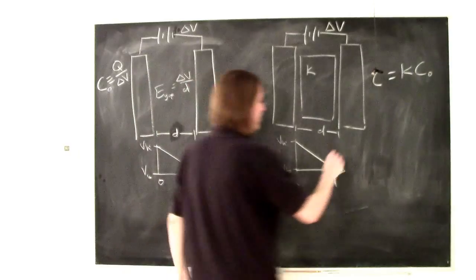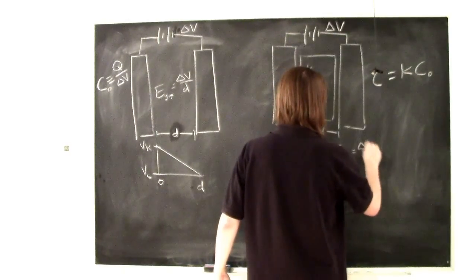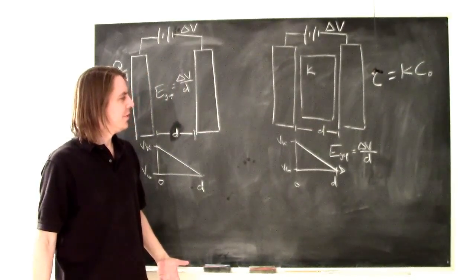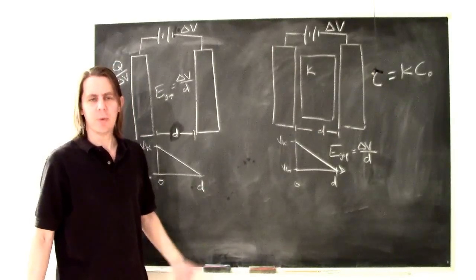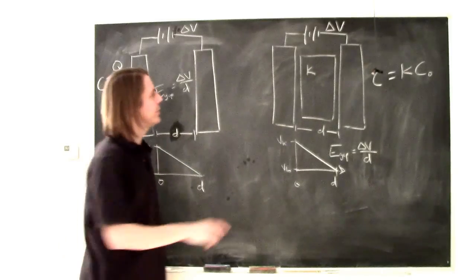Pretty much it has to be the same thing, that E in the gap has to be, again, delta V over D. So, it would seem that if that didn't change, then why would the capacitance change? Everything seems the same. Well, something does change.